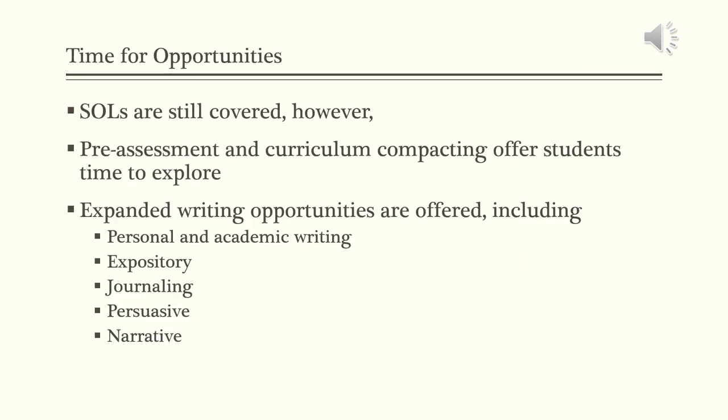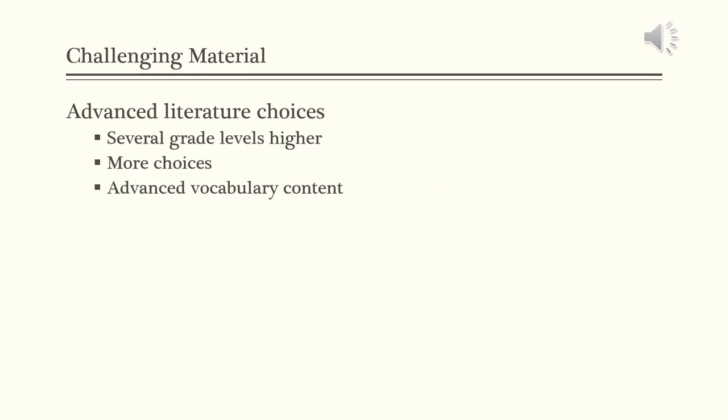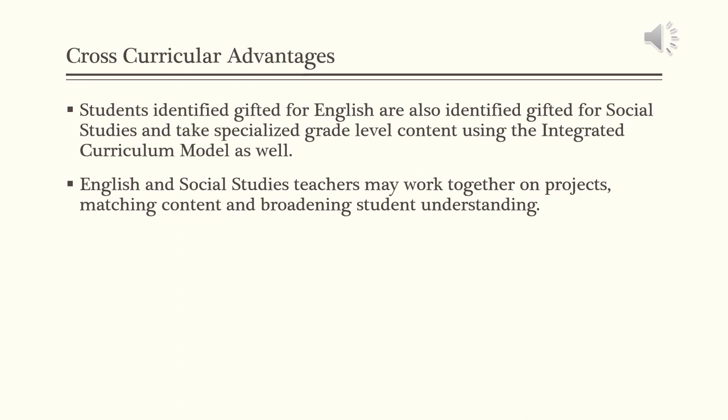The standards of learning are still covered; however, pre-assessment and curriculum compacting offer students more time to explore. Expanded writing opportunities are offered, including personal and academic writing, expository, journaling, persuasive, and narrative writing. Advanced literature choices in these classes means that students will be working with material that is several grades higher, they will have more choices, and they will have an advanced level of vocabulary content. Students identified gifted for English are also identified gifted for social studies, and take specialized grade level content using the integrated curriculum model as well. English and social studies teachers may work together on projects, matching content and broadening student understanding.